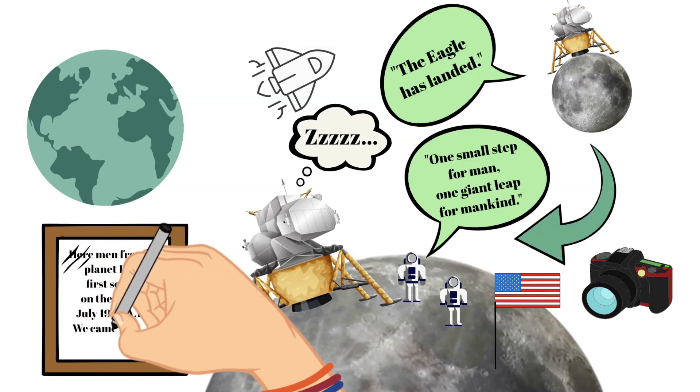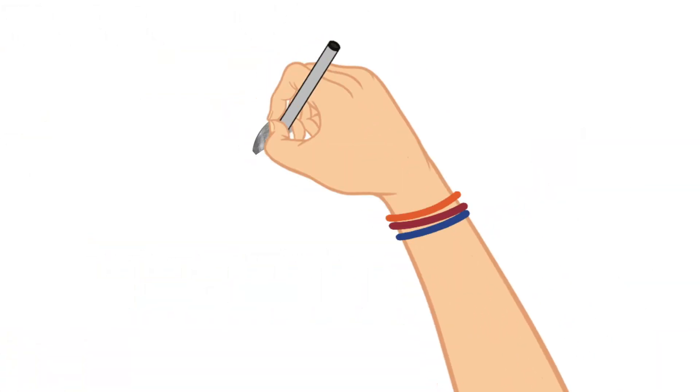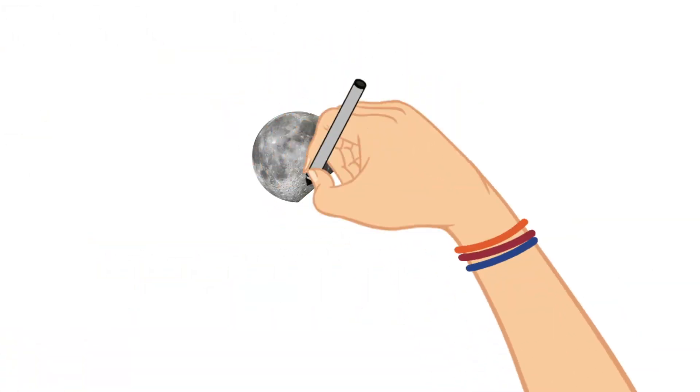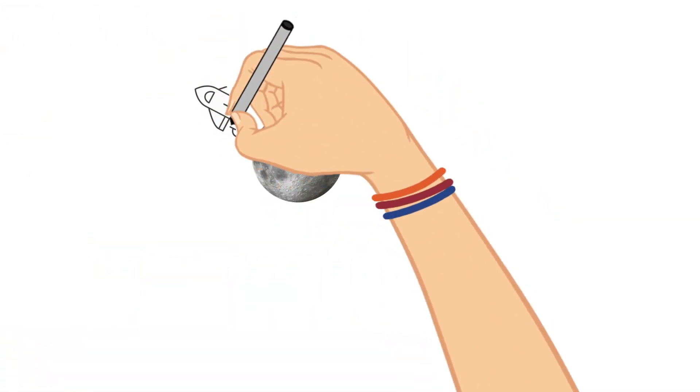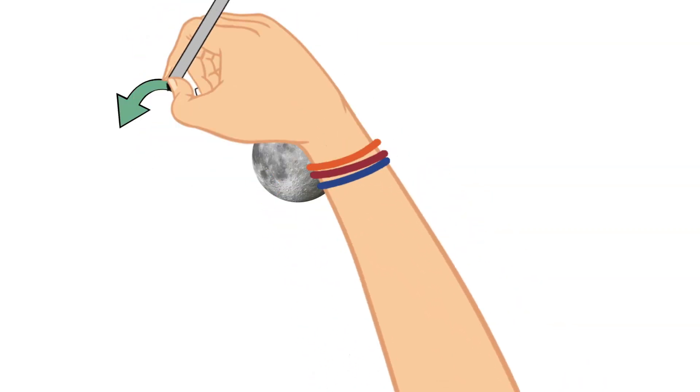Neil Armstrong and Buzz Aldrin rejoined Collins back in the command module and then began their journey home. They arrived back safely and splashed down in the Pacific ocean.